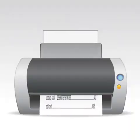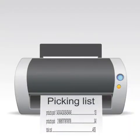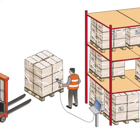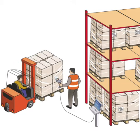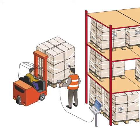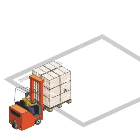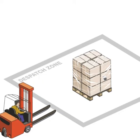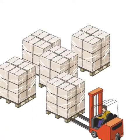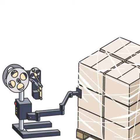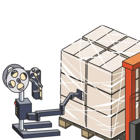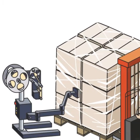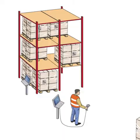The picking lists, helping to find the products in the warehouse, are generated automatically. The pickers can scan the barcodes on the boxes or pallets while picking them up from the shelves. If the packages need to be broken down, new shipping units with new barcode labels are prepared.